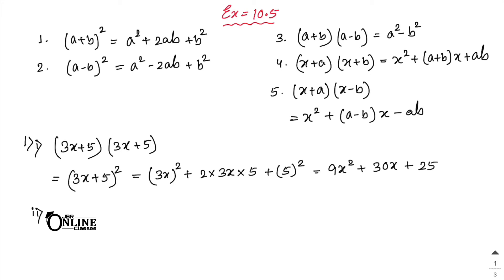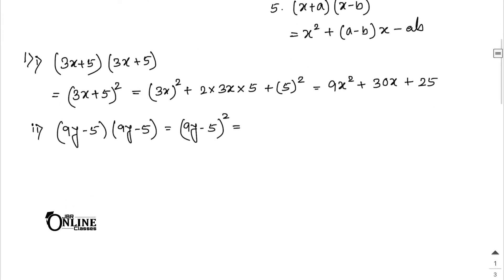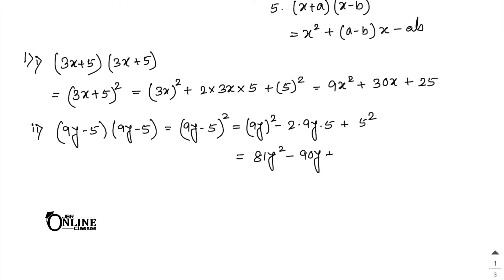Number 2: you have (9y - 5)(9y - 5) = (9y - 5)². Apply (a - b)² = a² - 2ab + b². The answer is 81y² - 90y + 25.